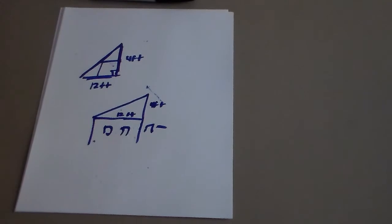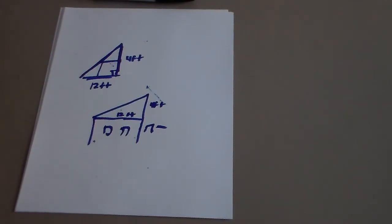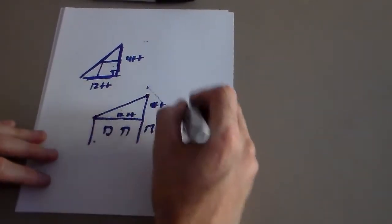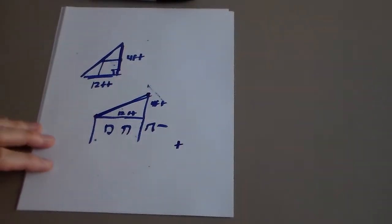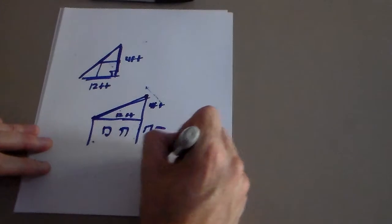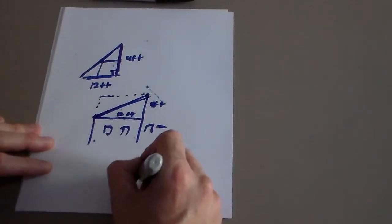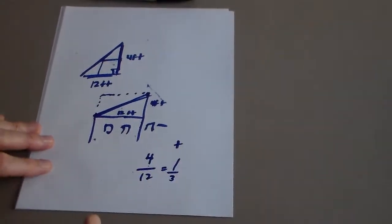Pause the video. If I'm looking at the slope of this roof, I know it's going to be a positive slope because it rises as you look at it from left to right. I went up 4 and I went over 12, so my slope would be 4/12, which is 1/3.